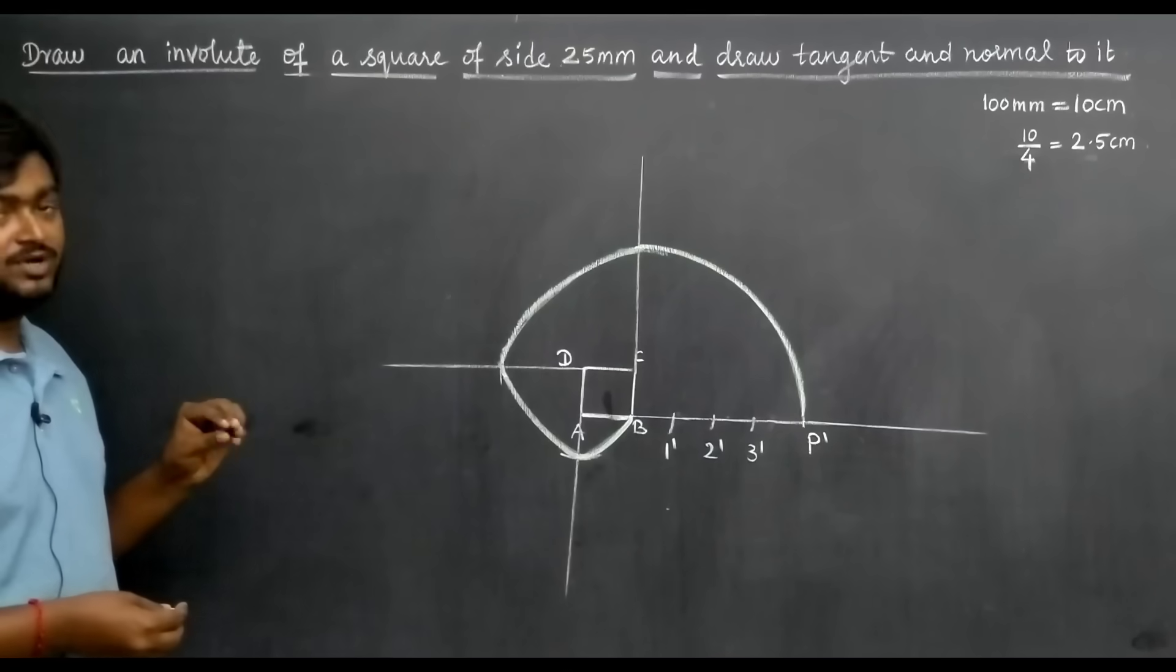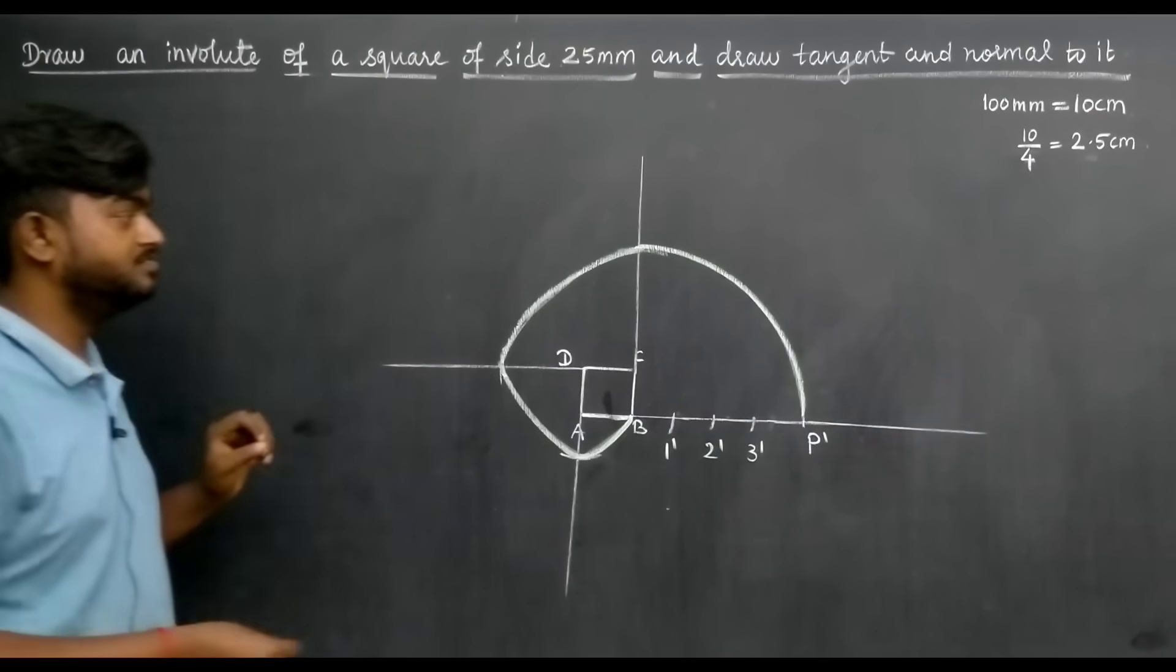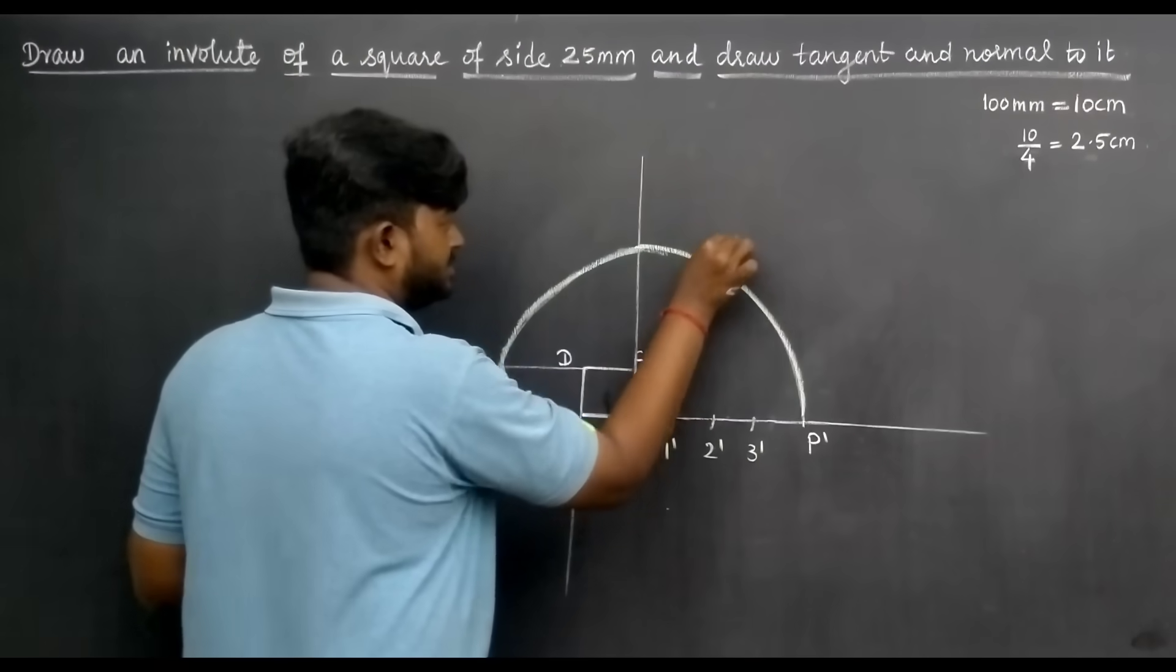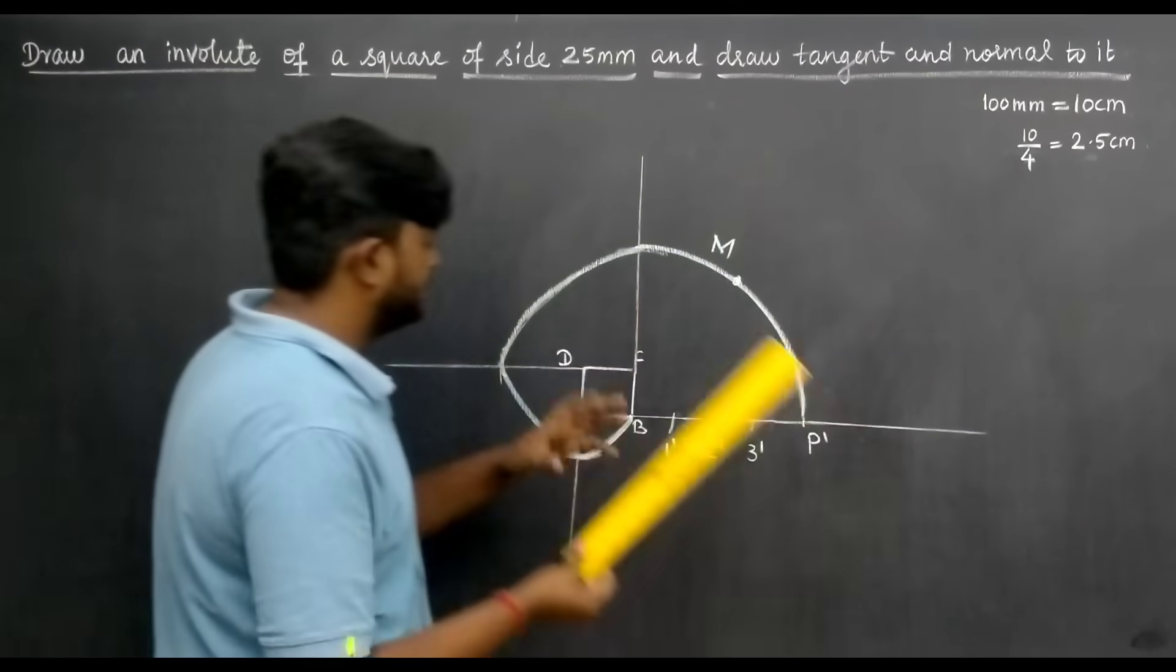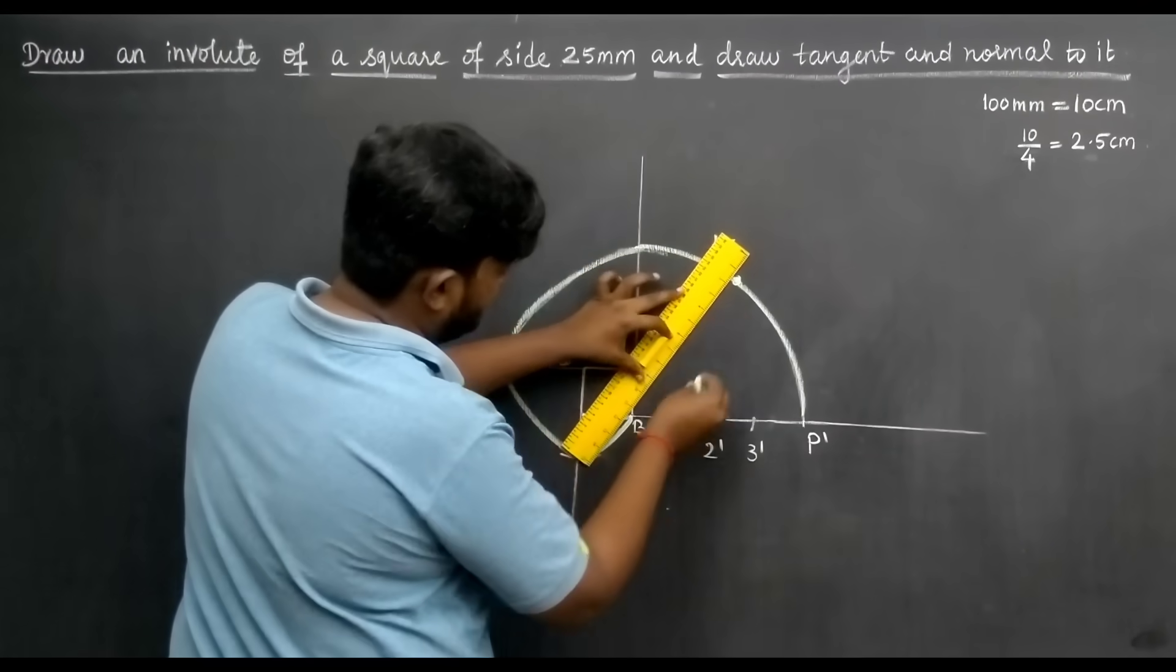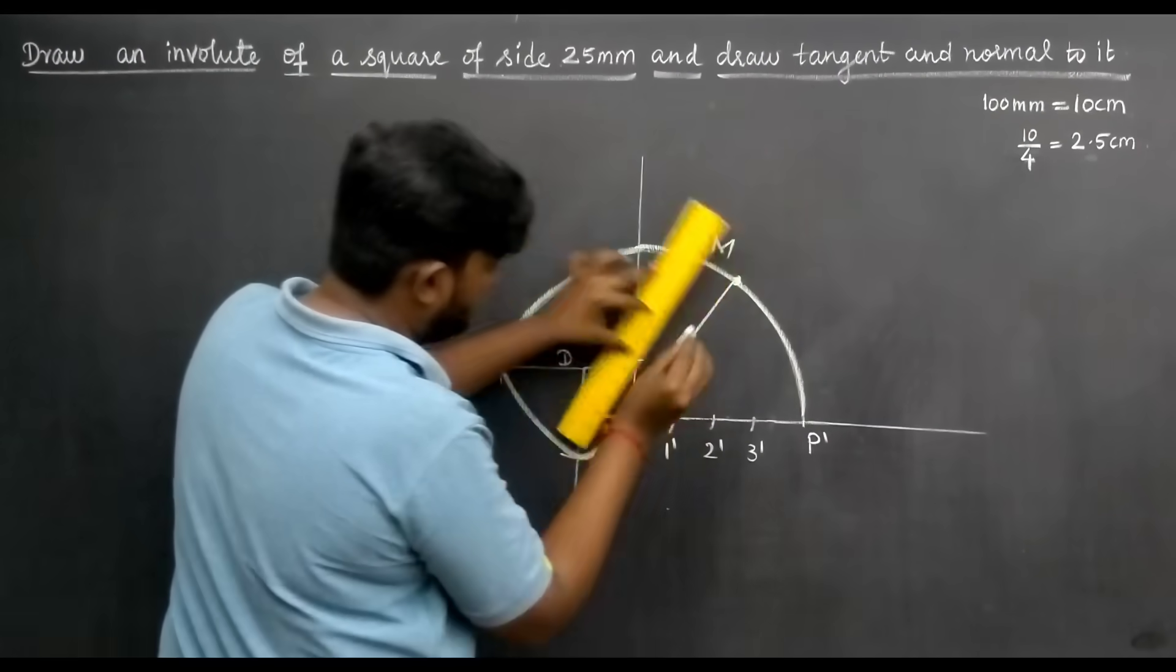Now we draw the tangent and normal. So in the involute of square, mark a point here. This is M. Using the scale, mark the M point on the curve. Draw a line.